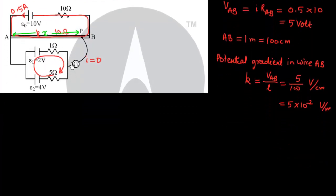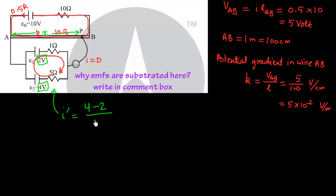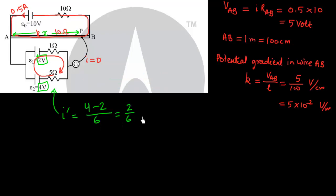Now the current in the secondary circuit, I dash, will be equal to 4 minus 2 upon 5 plus 1, that is 2 by 6, which means 1 by 3 ampere.